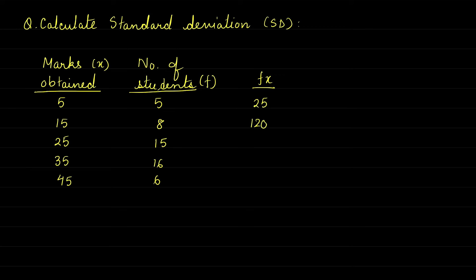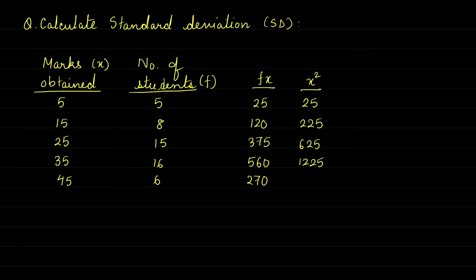The FX values are 25, 120, 375, 560, and 270. Next, we need to find out the X² column. Five squared is 25, fifteen squared is 225, twenty-five squared is 625, thirty-five squared is 1225, and forty-five squared is 2025.